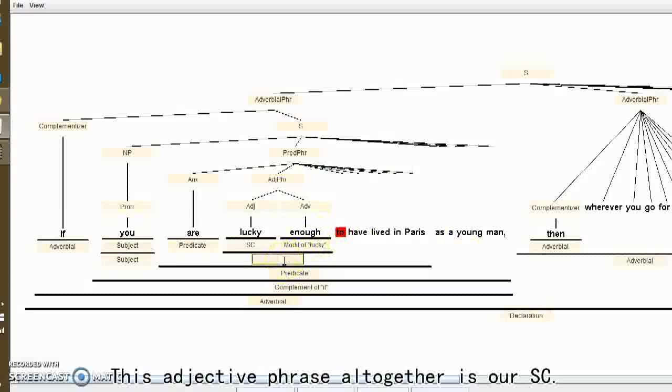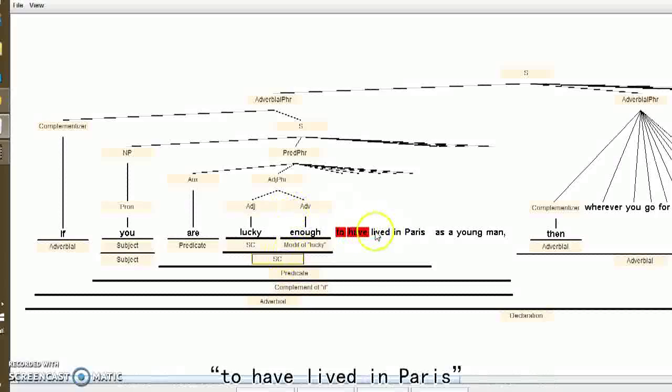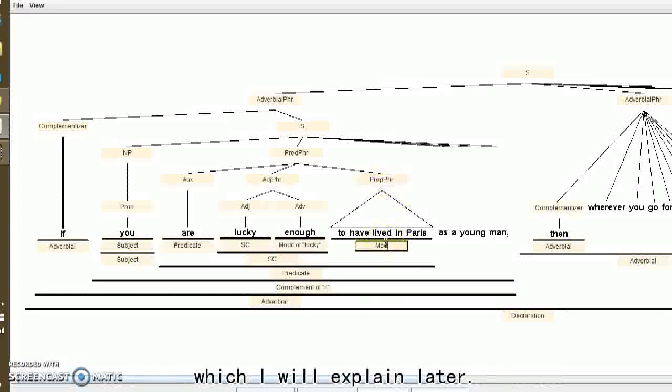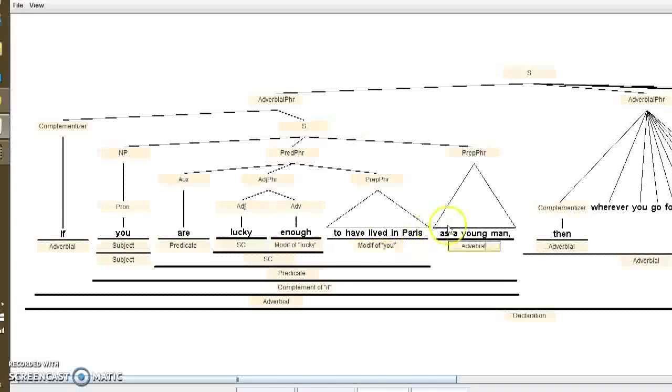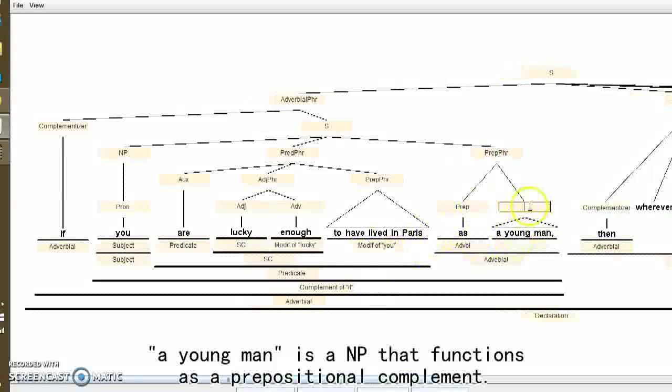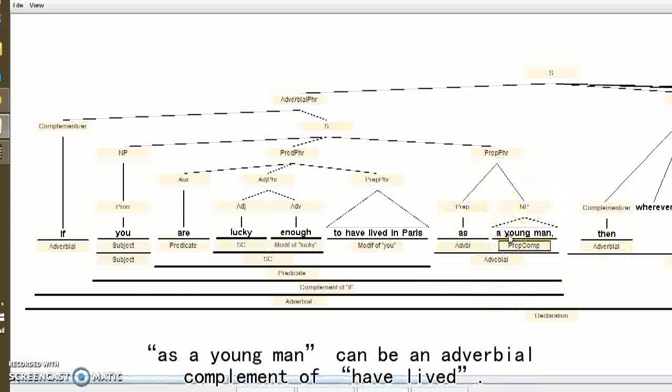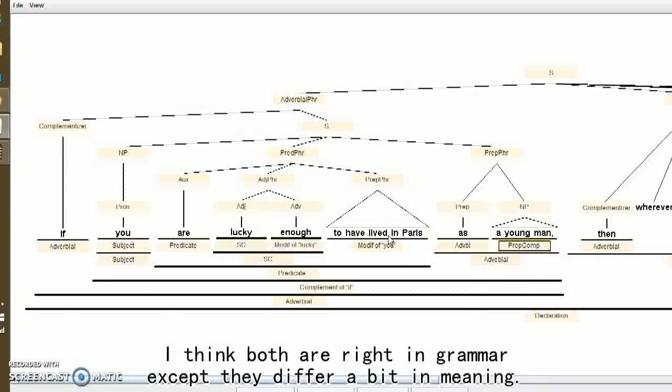So this adjective phrase all together is our subject complement. To have lived in Paris, here I will say it is a prepositional phrase which I will explain later. As the head, gentleman is a noun phrase that functions as a prepositional complement. Some people might disagree and say that as a young man can be an adverbial complement of have lived. I think both are right in grammar except they differ a bit in meaning.